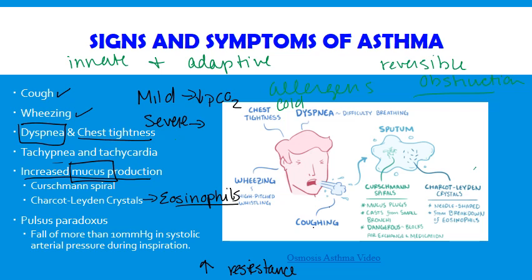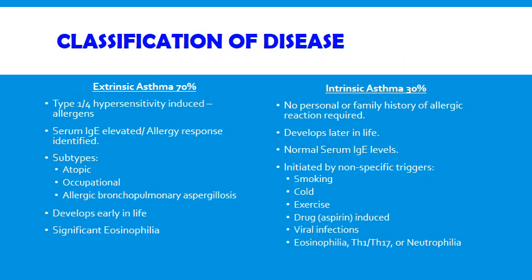Bronchial hyperresponsiveness can be verified through testing with an FEV1, seeing a decrease of 20% in response to a provoking trigger. There are largely two separate forms of asthma that were originally described, but I don't want you to think of these as completely distinct from each other — think of them more on a spectrum.